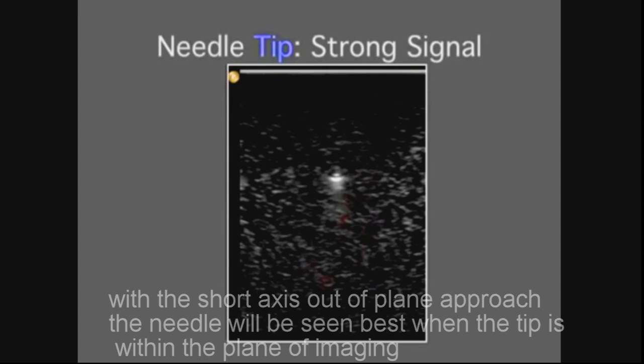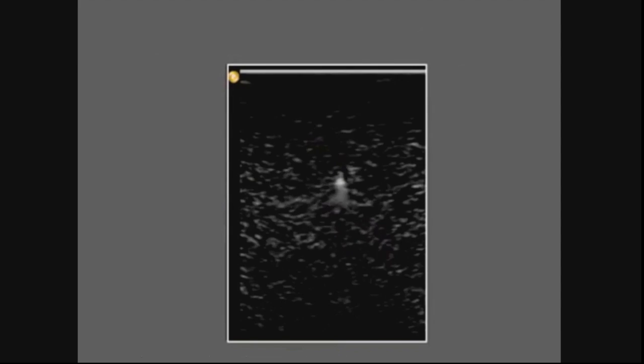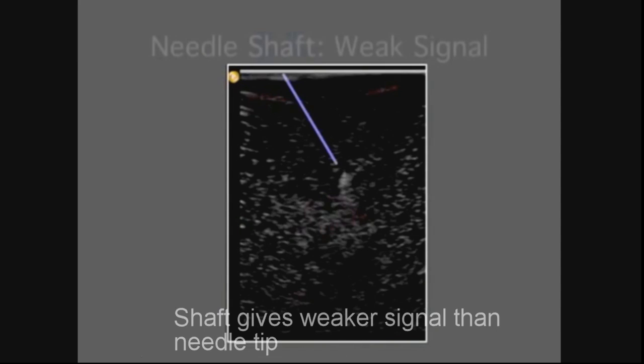With a short axis out-of-plane approach, the needle will be seen best when the tip is within the plane of imaging. Shaft gives weaker signal than needle tip.